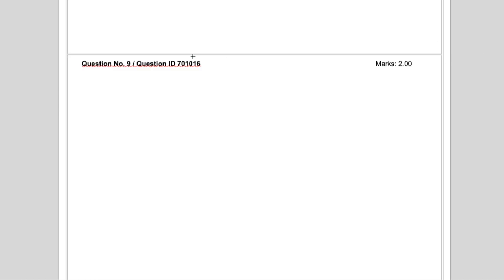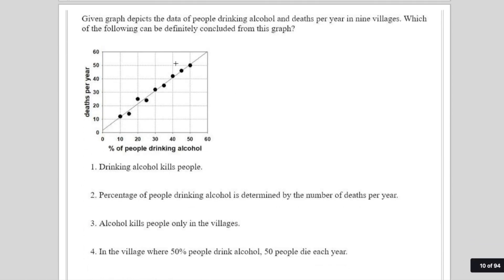Let's start with this question — from the aptitude portion, question ID 701016. It is a data interpretation question where a graph depicts data of people drinking alcohol and deaths per year in nine villages. The question asks which of the following can be definitely concluded. There are four options, like 'drinking alcohol kills' or 'percentage of people drinking alcohol is determined by the number of deaths per year' — this is totally incorrect.